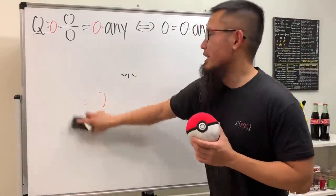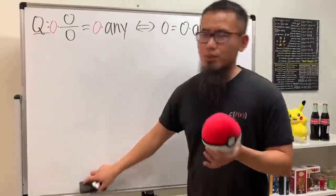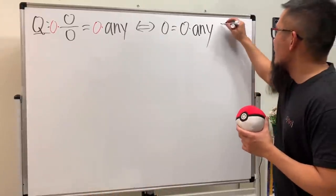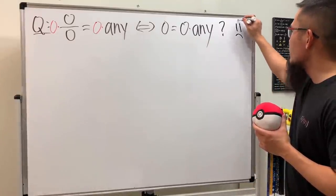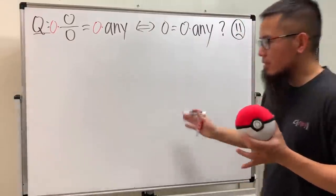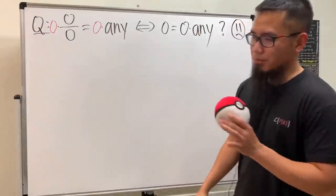Of course don't do that. We should never multiply zeros on both sides of an equation. Just don't do that right, so is this legit? I don't know, I'm not quite sure about that. It's a no for me.